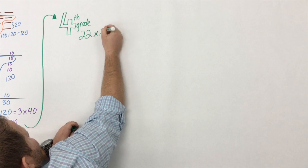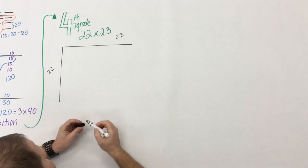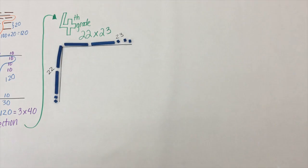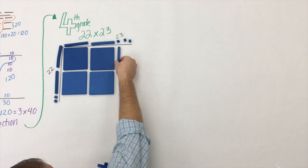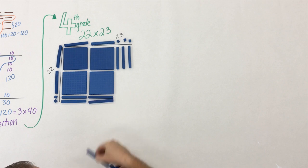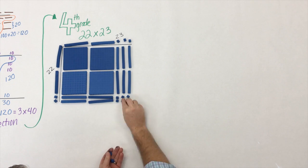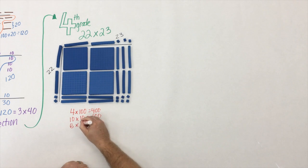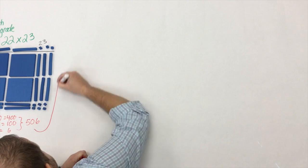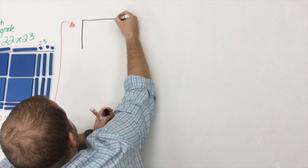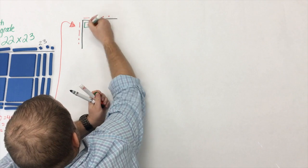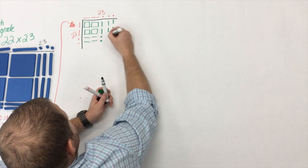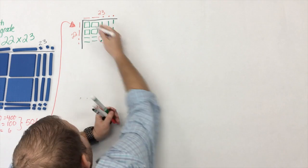In fourth grade, students are expected to multiply two-digit by two-digit numbers. With a concrete model it looks similar — we have 23 across the top and 22 down the side. Ten times ten is 100, and that's where the 100 plates come into play. Once students build the model they see they have four 100s, ten 10s, and six 1s, and they add that all together to get 506. Then they draw a pictorial representation matching their concrete model — the 100 plates, the 10-rods, and the 6 ones — all together, 506.